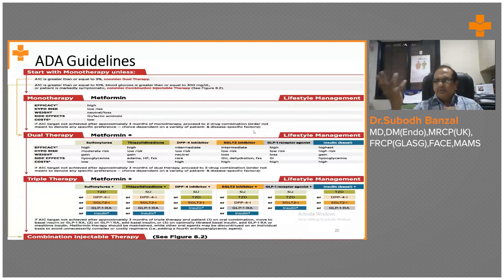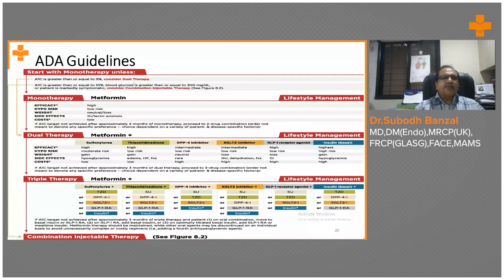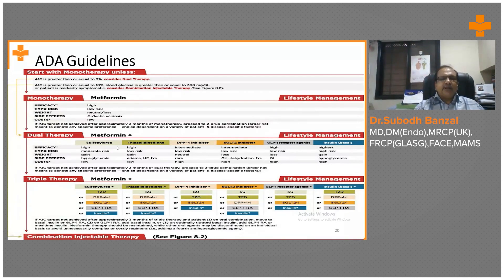Before I go to medication properly, let us see the guidelines. All the guidelines say: start with lifestyle management, and then you start with metformin — this is the monotherapy. And if people have A1C more than 7.5, then you go for dual therapy — metformin with other medications like sulfonylurea, glitazone, DPP-4 inhibitor, SGLT2 inhibitor, GLP-1 receptor analog, or insulin — lifestyle will always be there.